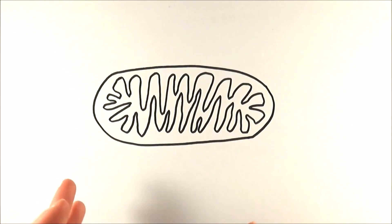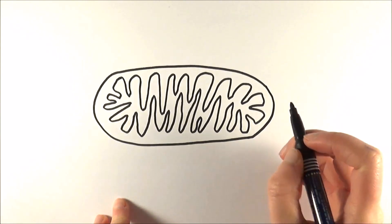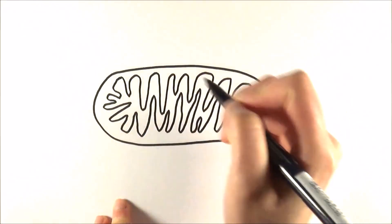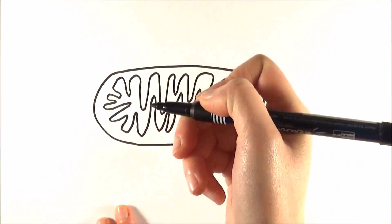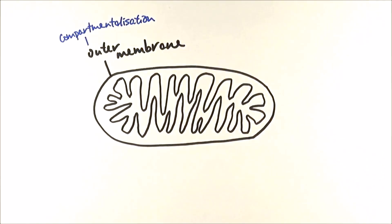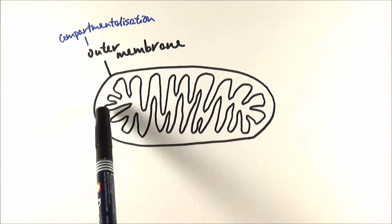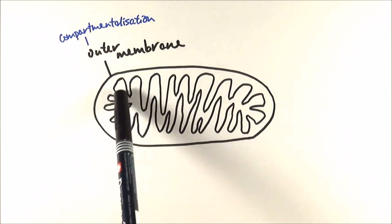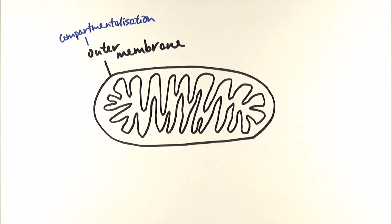It's important to know that mitochondria is a double membrane organelle. First, we have the outer membrane which surrounds everything. The function of the outer membrane is compartmentalization. It's important to keep things in different environments because the enzymes, proteins, or other chemicals within these different areas may interact, and you might not want that happening. So the outer membrane separates the cytoplasm from the inner space of the mitochondria.